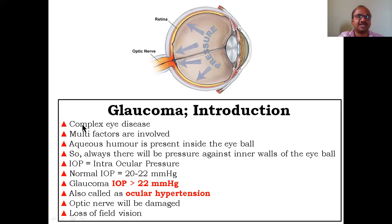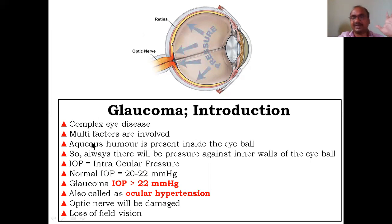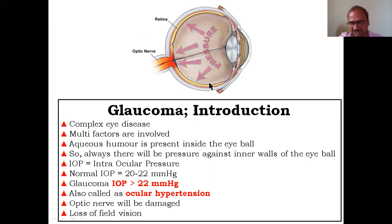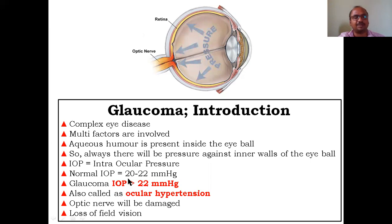Glaucoma is a complex eye disease because a number of factors are involved — it is multi-factorial. In normal conditions, intraocular pressure is 20 to 22 mmHg. In glaucoma, the IOP is greater than 22 mmHg.